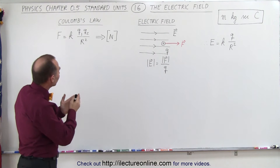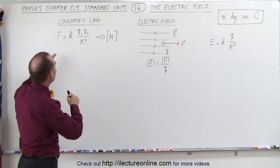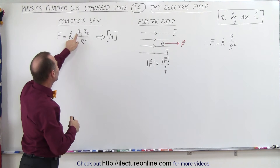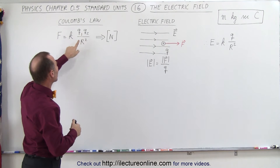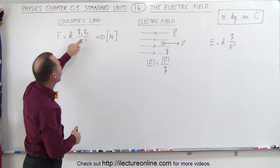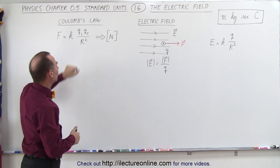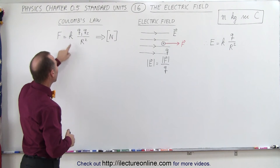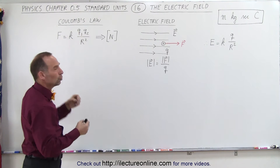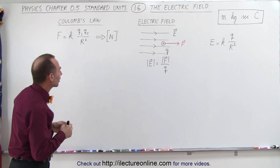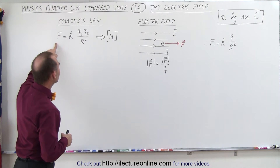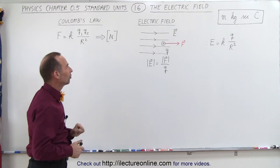Before we get into the electric field, let's go back to Coulomb's Law, which tells us that the force between any two charged objects is equal to k times q1 times q2, divided by the distance between them squared. k is the constant, and q1 and q2 are the charges on the two objects. Notice that the units for that ended up to be newtons.